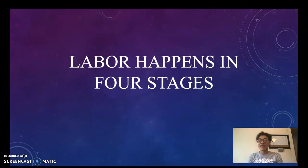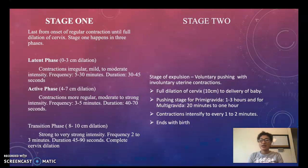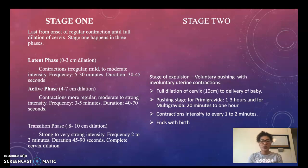Labor happens in four stages. Stage one is the longest stage of all four. It lasts from the onset of regular contractions to the full dilation of the cervix. Stage one happens in three phases.